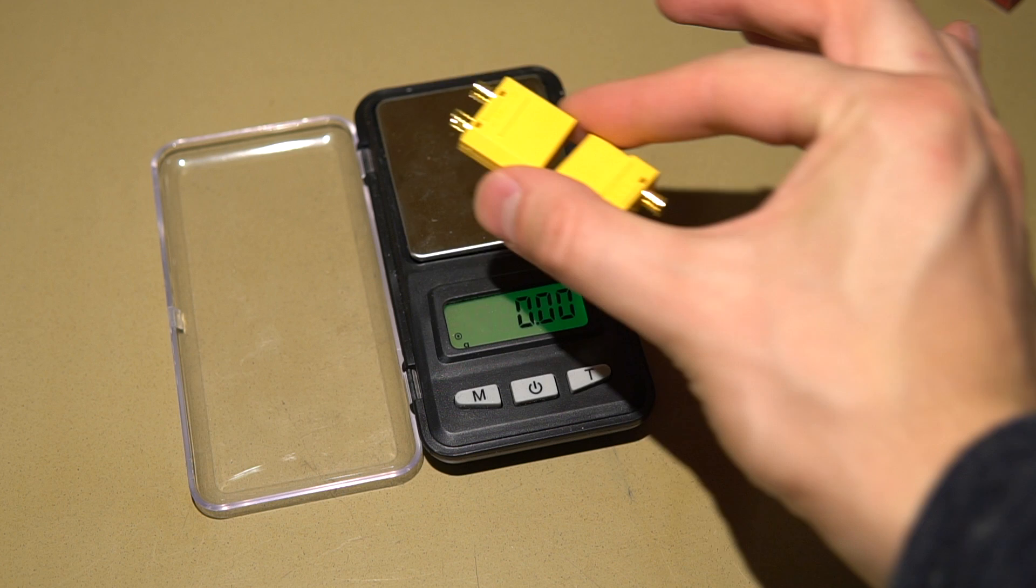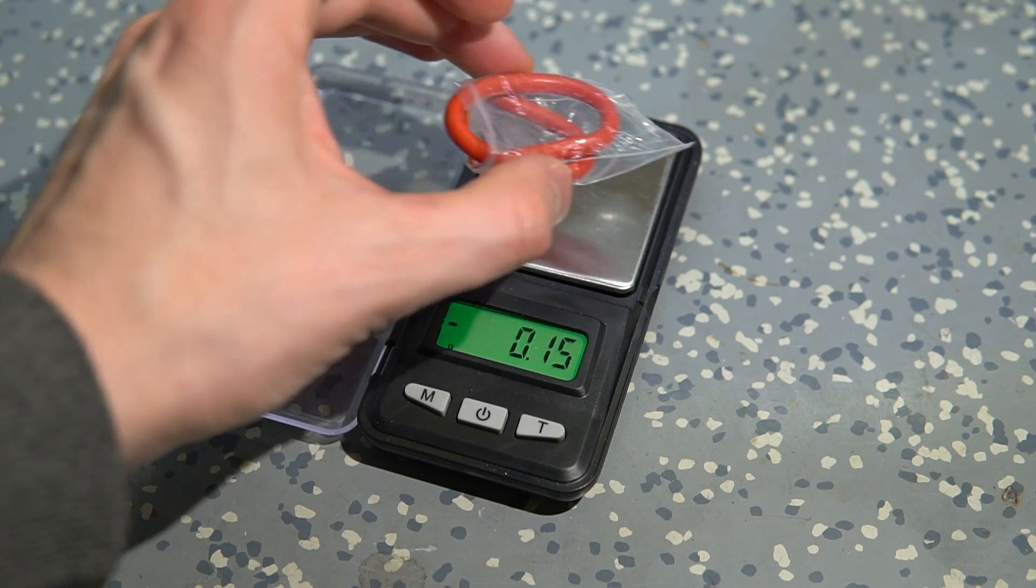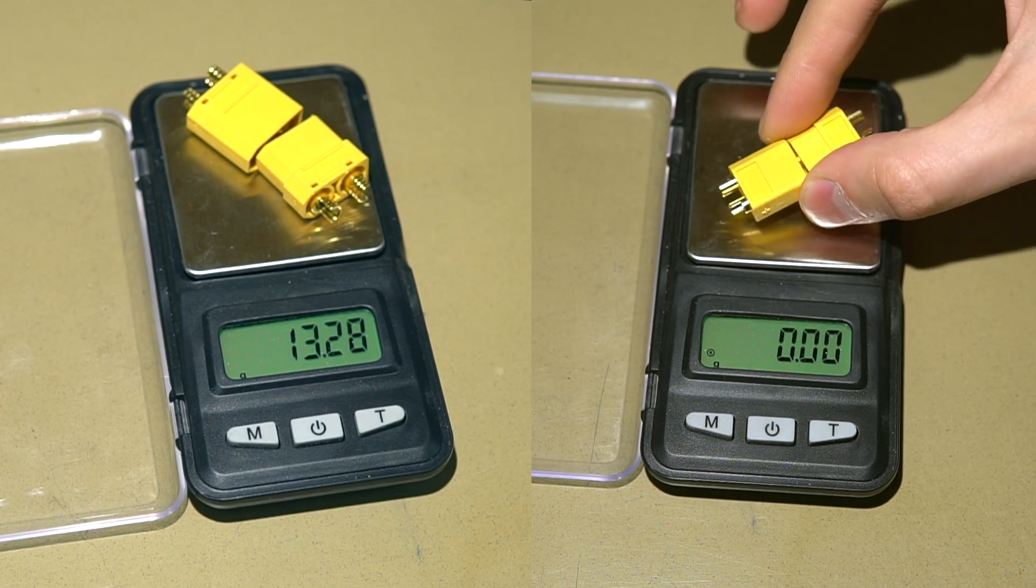In fact, with the connector coming in at 13.28 grams and the 10 gauge wire weighing 61 grams per meter, things start to get heavy. So, when exactly would you need an XT90?